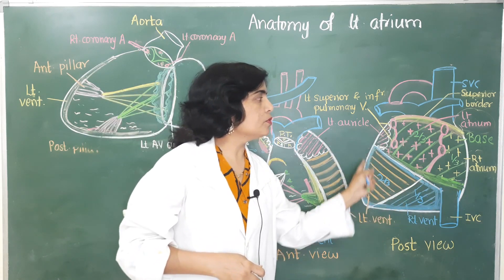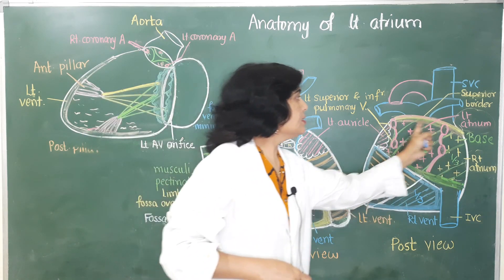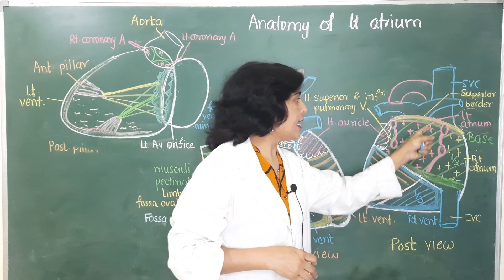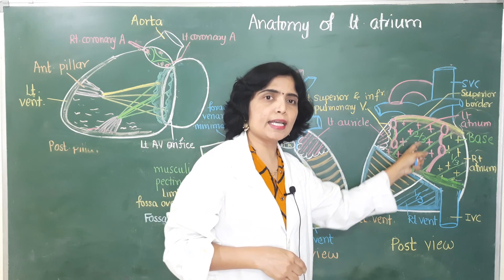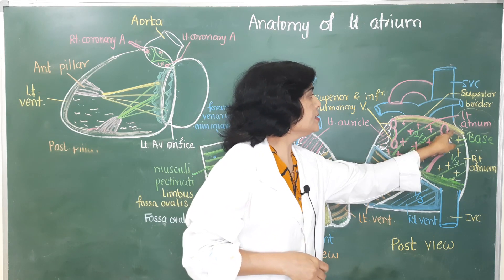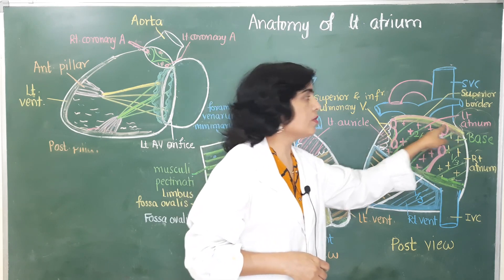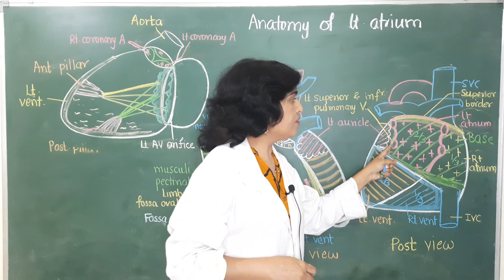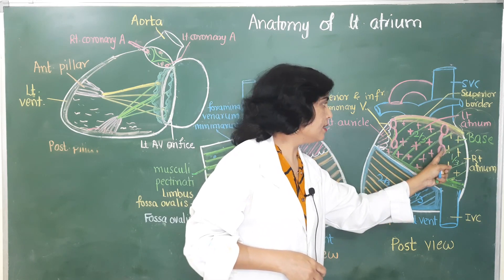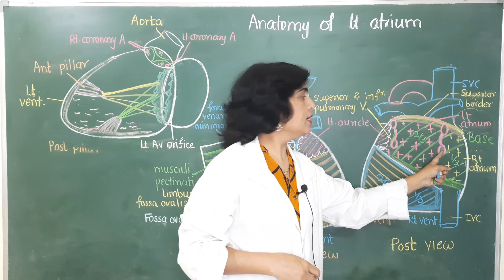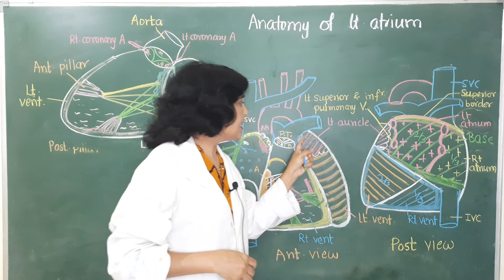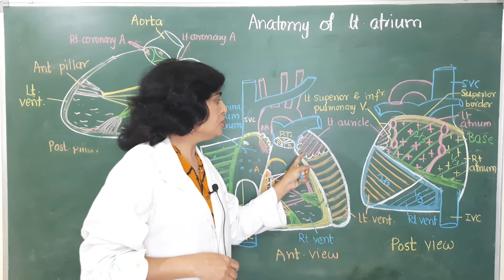Coming to the left atrium — the left atrium is seen from the posterior view of the heart. It is quadrilateral in shape. It forms the anterior boundary of the oblique sinus of the pericardium. It receives four pulmonary veins: two from the left side and two from the right side — left superior pulmonary vein, left inferior pulmonary vein, right superior pulmonary vein, and right inferior pulmonary vein.